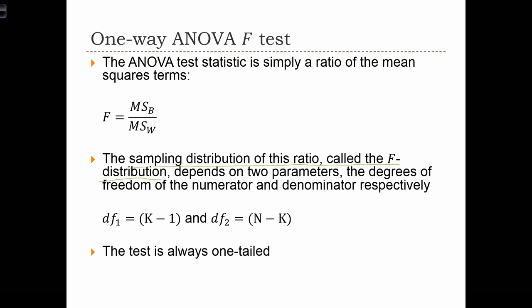However, the F distribution depends on two parameters. It depends on the degrees of freedom associated with the numerator, which we'll call dF1, which is equal to the number of groups minus 1. And the second parameter is the degrees of freedom associated with the numerator, which is n minus k, the overall number of observations minus the number of groups.